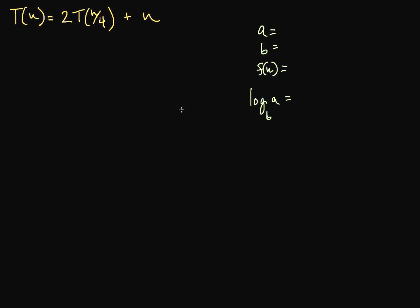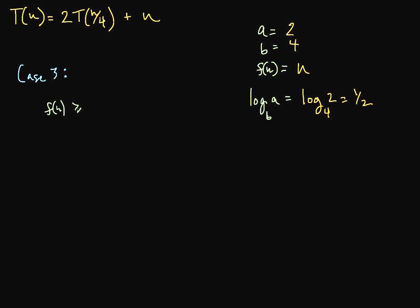Now let's try the last example, which will be a Case 3 scenario. Again a = 2, b = 4, but now f(n) = n, and log base b of a = log base 4 of 2 = 1/2. If you don't spot the right case immediately, just plug and test each one. The first condition is that f(n) is greater than or equal to some constant times n^(1/2 + ε).